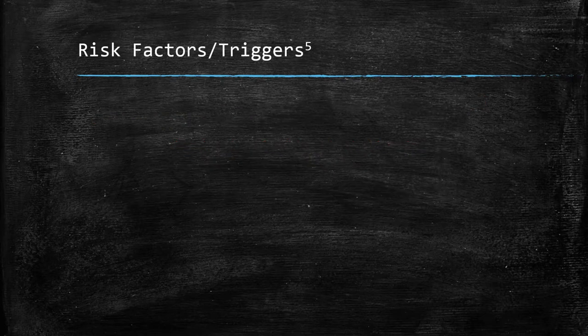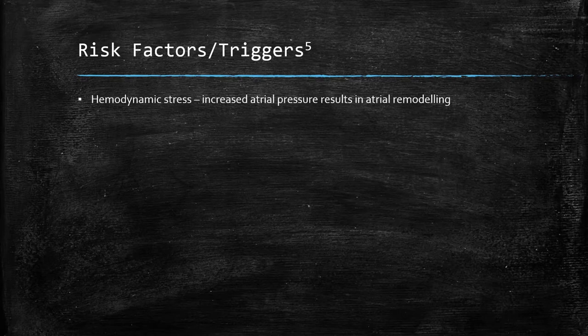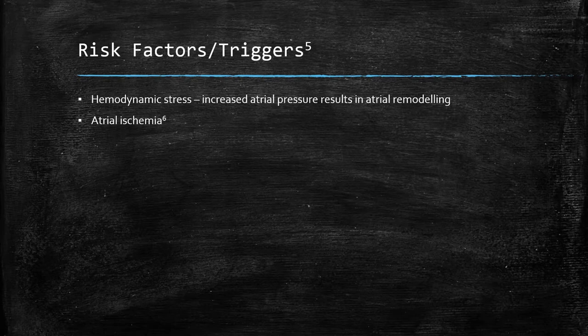Risk factors and triggers of atrial fibrillation. Note that much of the etiology of atrial fibrillation is still shrouded in mystery, though there are several risk factors or triggers associated with the condition. Hemodynamic stress resulting in increased atrial pressure results in remodeling of the atria, and conditions such as tricuspid stenosis or pulmonary valve stenosis increase atrial pressure. Atrial ischemia is well studied in animal models to be associated with atrial fibrillation, causing increased spontaneous atrial ectopic activity and slowing of atrial conduction, leading to AF.